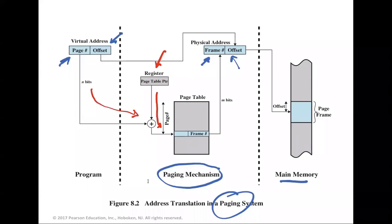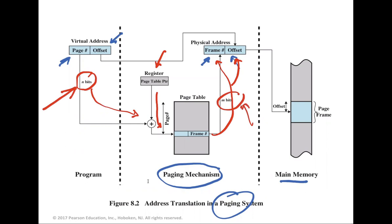Typically, the page number field is longer than the frame number field — N bits for the page number and M bits for the frame number — where N is always greater than M. N is used in the virtual address while M is used in the physical address. This inequality results from the fact that the number of pages in a process may exceed the number of frames in main memory.